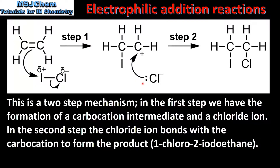The chloride ion then uses one of its lone pairs of electrons to form a bond with the carbocation. The movement of the pair of electrons is shown by this curly arrow. On the right we have the structure of the product, which is 1-chloro-2-iodoethane.